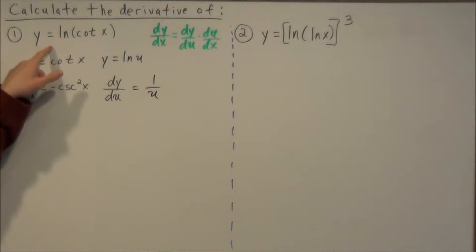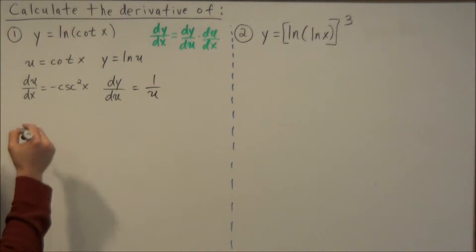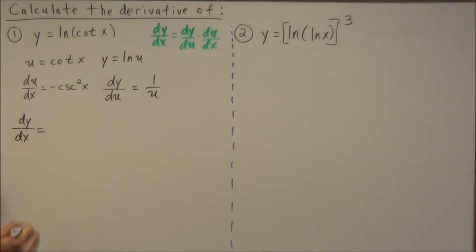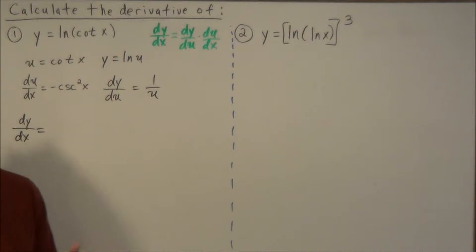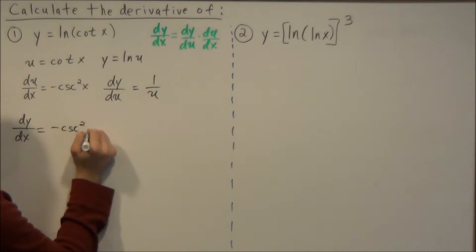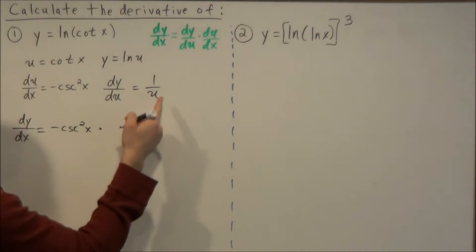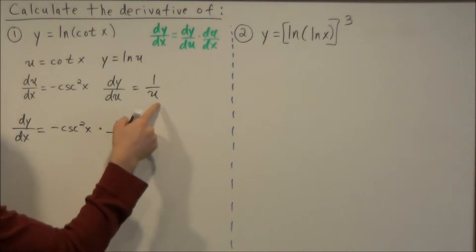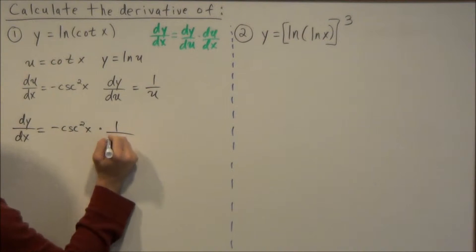So then to find dy dx we need to multiply these two derivatives together. But just know that our derivative should be all in terms of x. So when we write negative cosecant squared of x times one over u, instead of u we're going to replace it back with cotangent x.